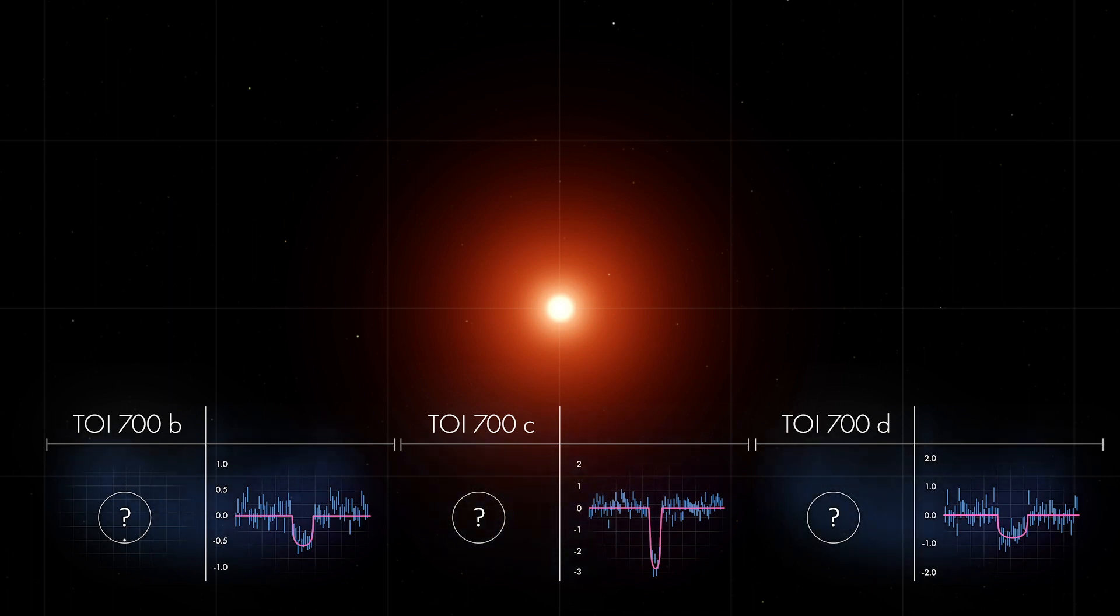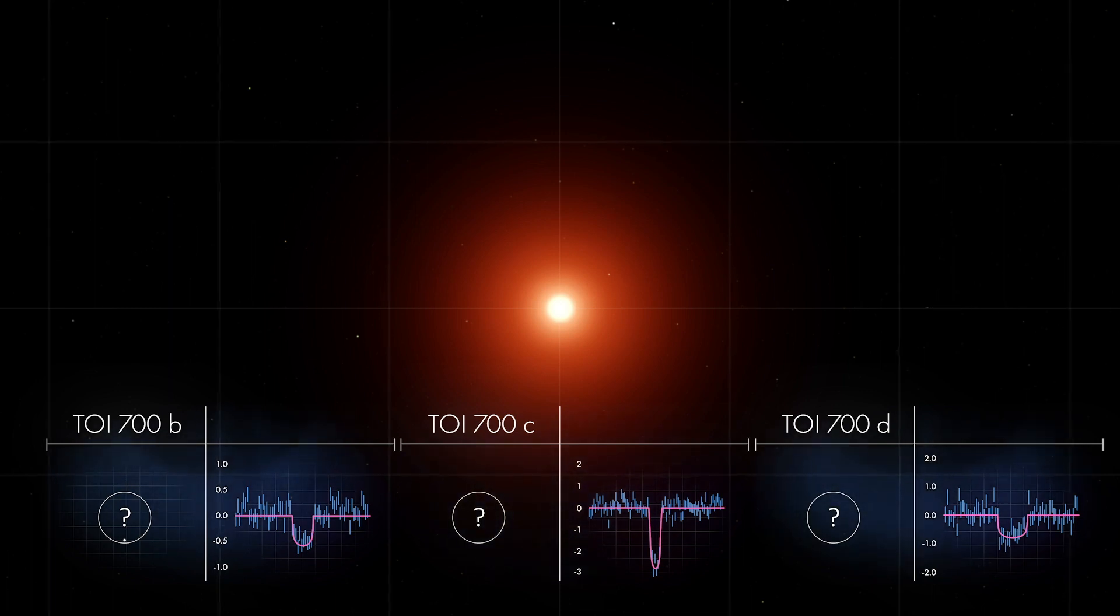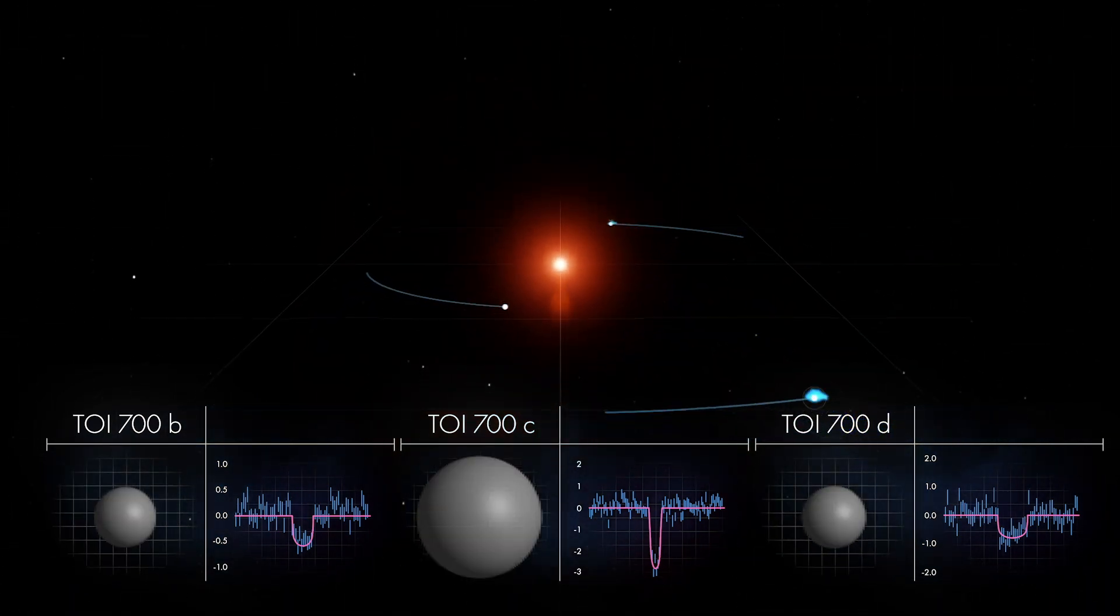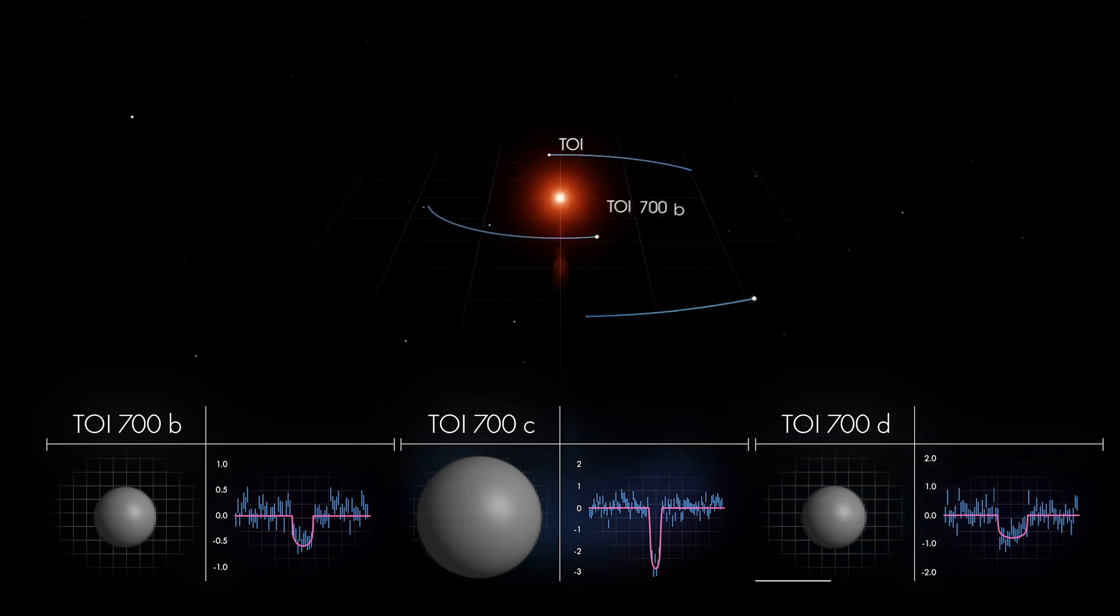TESS observed this system for nearly 11 months and saw each planet transit multiple times. Scientists determined that the inner and outer planets are almost Earth-sized and may be rocky.